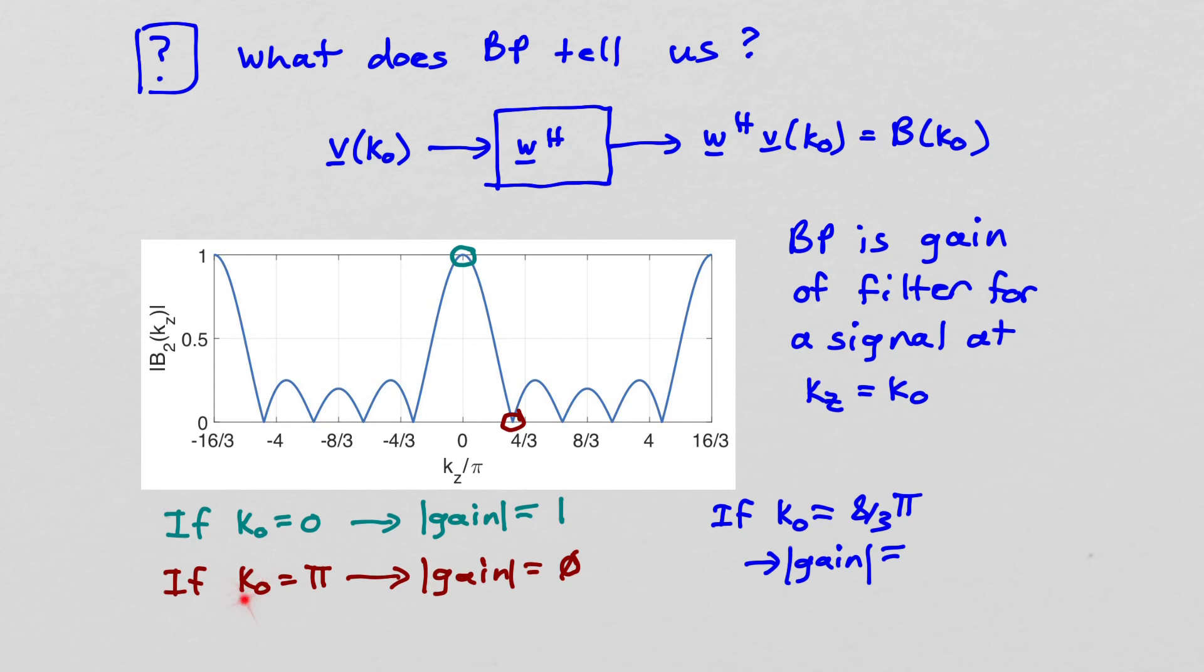So what does that do? That says if k0, the input wave number is pi, it doesn't pass through the filter. The filter, that spatial filter completely eliminates that signal. That may be desirable if that signal is some sort of interference that we want to get rid of so that we can focus on a signal that we do want.